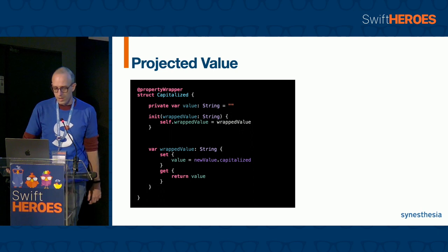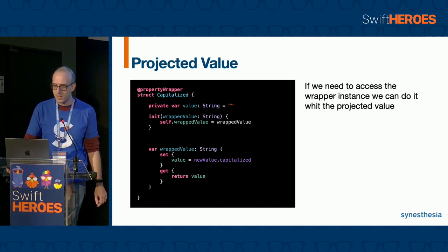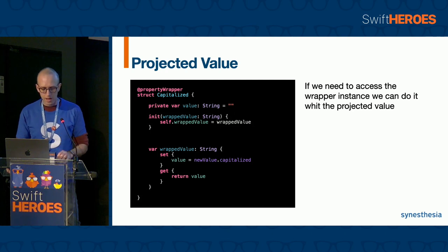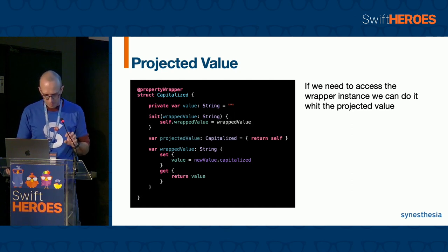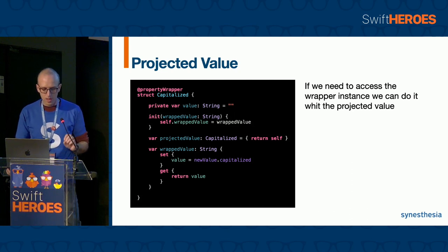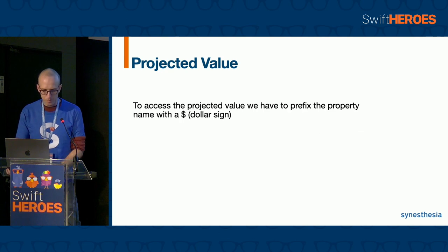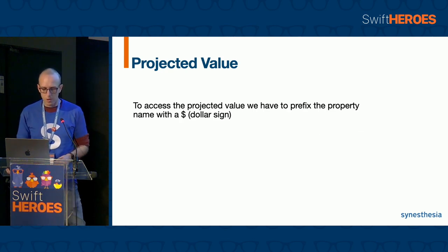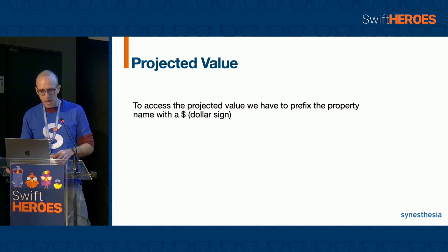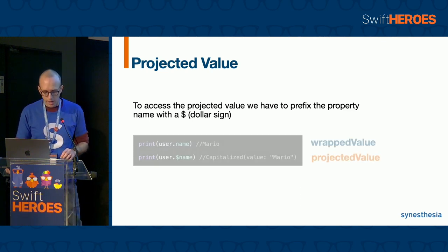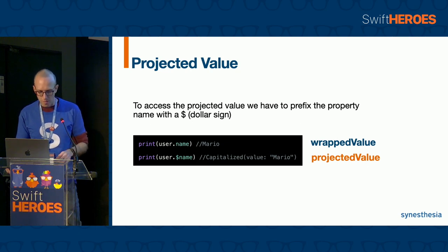In some cases we may need to access the wrapper instance instead of its value. This can be done through the projected value. We have to add a property to the wrapper called projectedValue and return self. The projected value can return any type of value, not necessarily the wrapper itself, but this is the most common use. To access the projected value, we have to prefix the property name with the dollar sign — so in this case, user.$name returns the instance of the wrapper instead of the value.